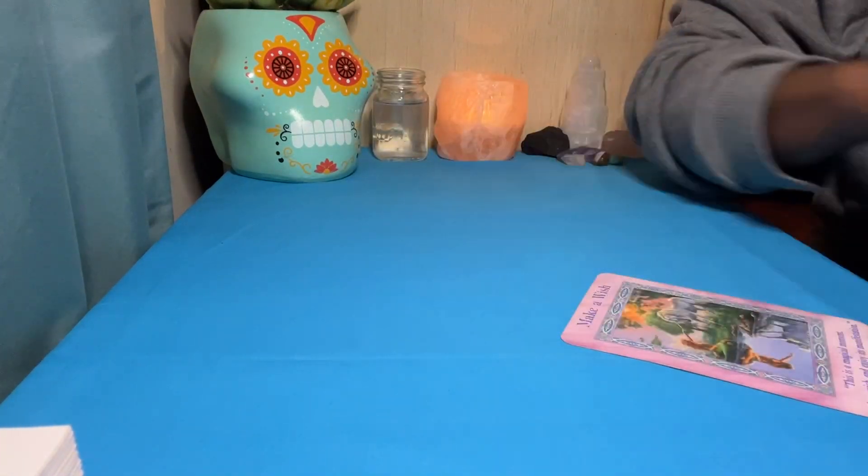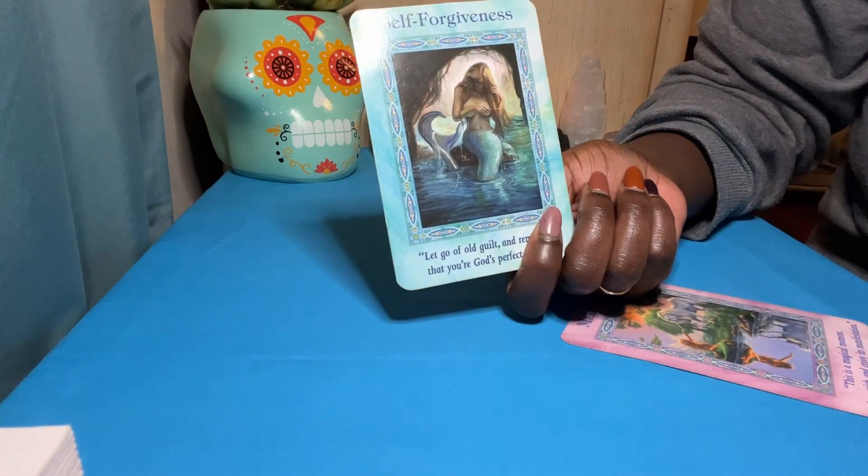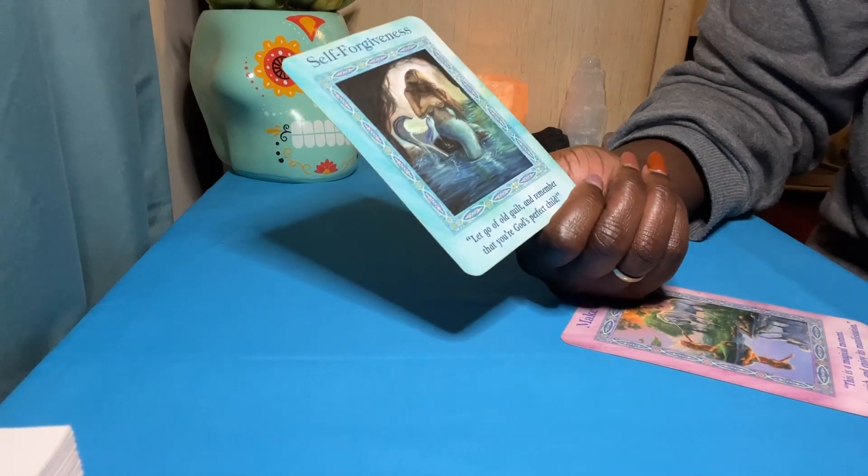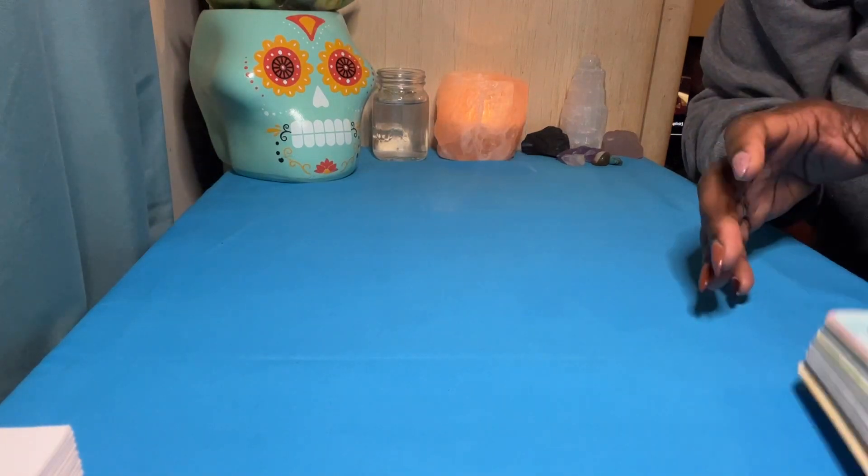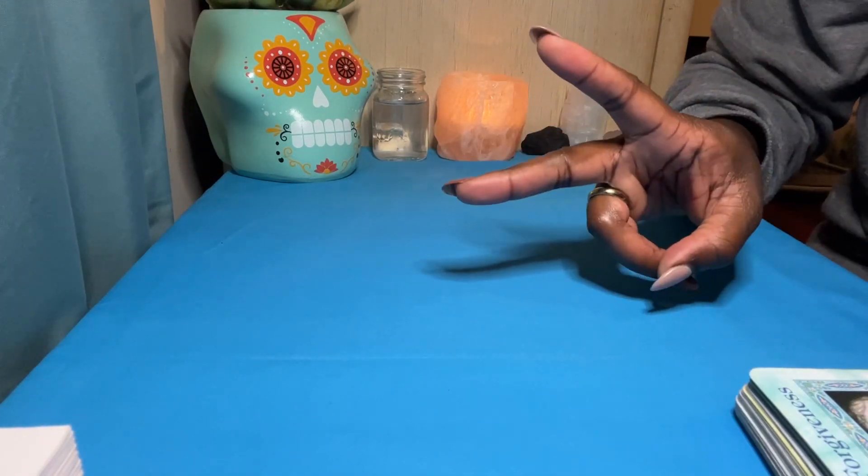I love you guys and then it also says self-forgiveness at the bottom of the deck. Let go of old guilt and remember that you're God's perfect child. Well, if that resonated with you guys, don't forget to like, subscribe and share and I'll see you later.